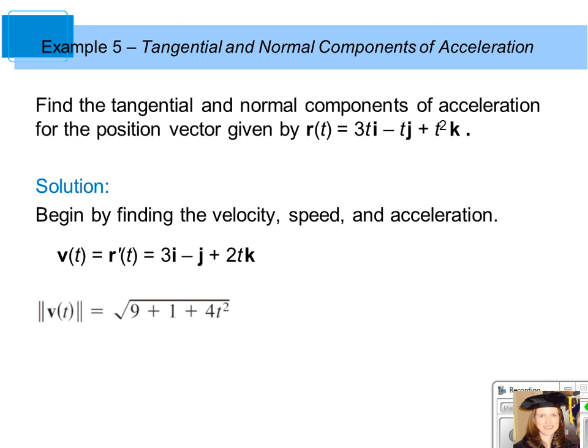The magnitude of the velocity vector valued function is equal to the square root of 9 plus 1 plus 4t squared. You square each of the components of your velocity vector valued function, add them together, then take the square root. This can be simplified to the square root of the quantity 10 plus 4t squared.